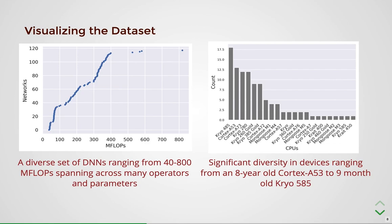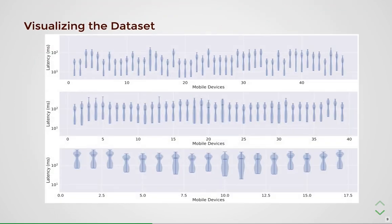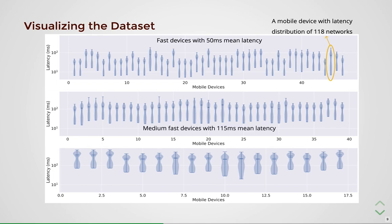The dataset shows a reasonably good and diverse choice of DNNs and mobile devices. To further study this diversity, we cluster the mobile devices based on latency from the network set. We observe three distinct clusters differing in speed of operation: fast, medium-fast, and slow devices with mean latencies of 50, 115, and 235 milliseconds respectively. Each violin plot corresponds to the latency distribution for a mobile device across all networks. From the overall distribution, we observe a huge variation with latency values differing by an order of magnitude, substantiating the richness of the crowdsourced data.